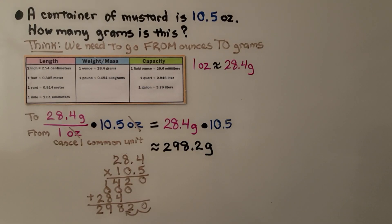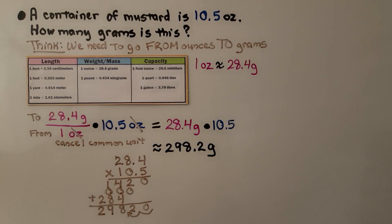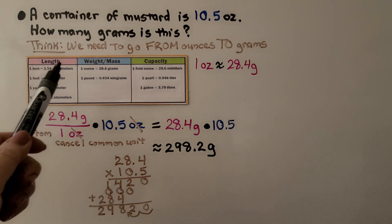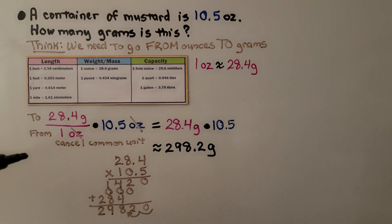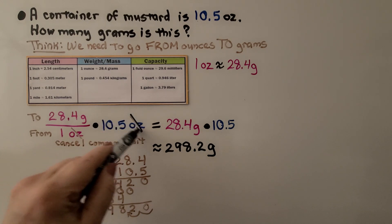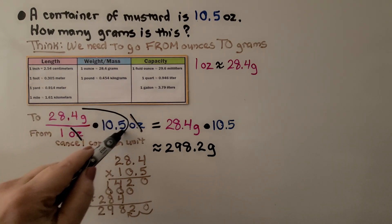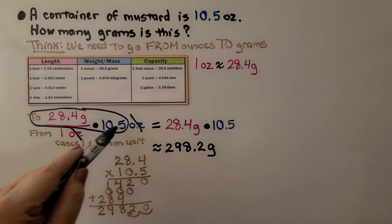A container of mustard is 10.5 ounces. How many grams is this? We need to go from ounces to grams. One ounce is approximately 28.4 grams. We're going from ounces to grams, so now we have 1 as a denominator. As we've learned in previous lessons, we can cancel the common unit. We're going to cross off ounce from both places. We're left with 28.4 times 10.5, and we can just multiply this.